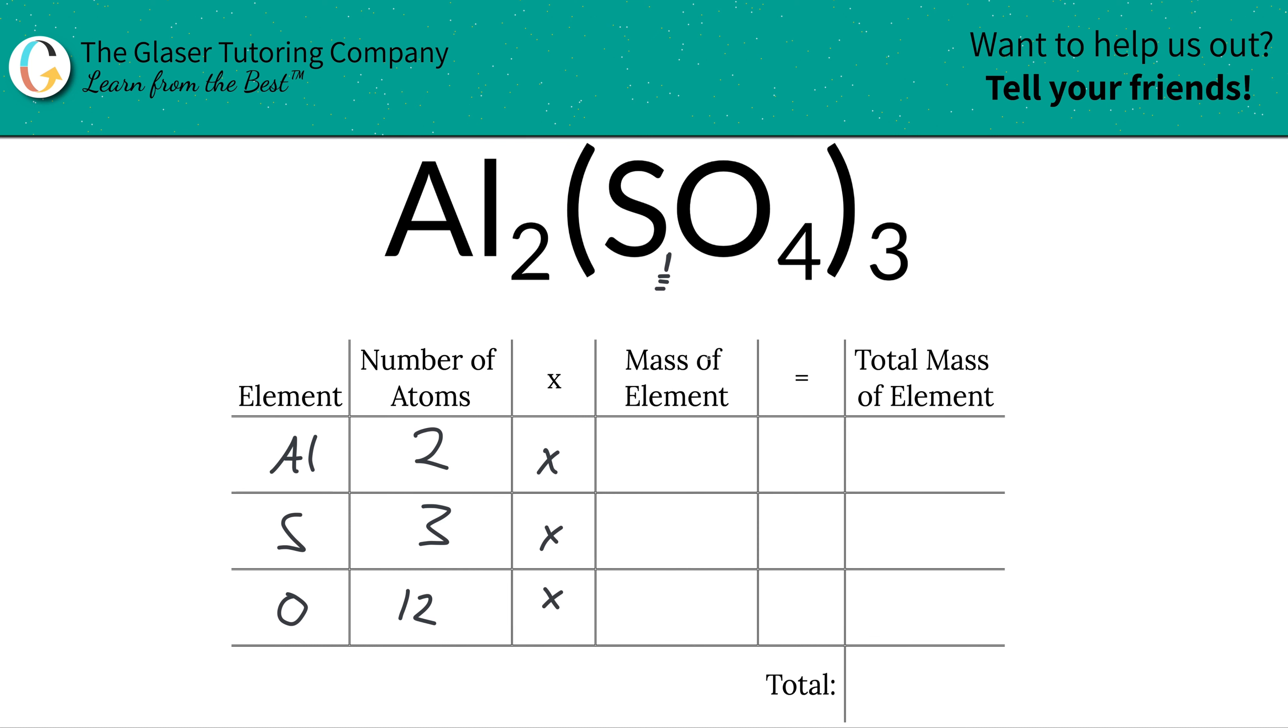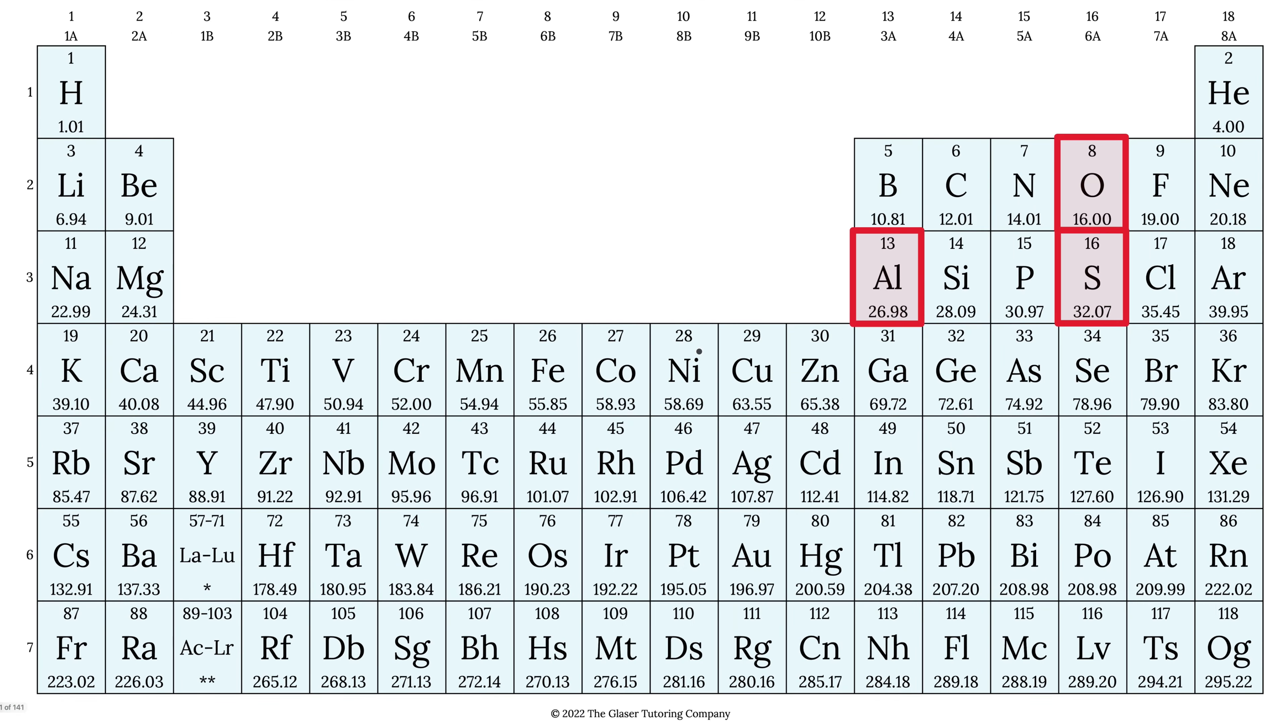Next, we're going to multiply those number of atoms by the mass of each particular element in the compound. So this is where the periodic table comes into play. We find the masses that we need. These masses will represent either gram per mole if you're finding molar mass or AMU if you're finding molecular mass. So aluminum is 26.98, sulfur is 32.07, and oxygen is about 16.